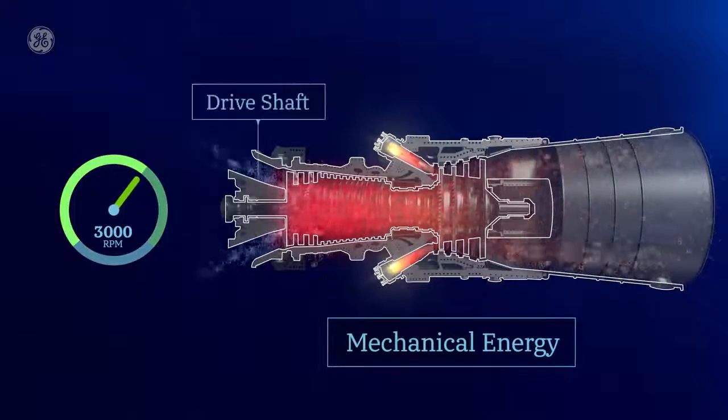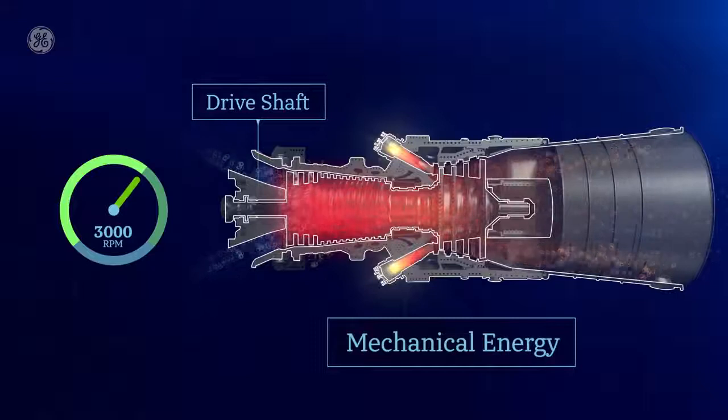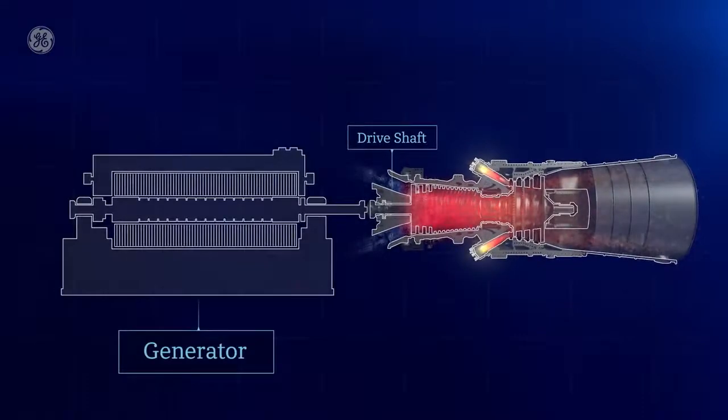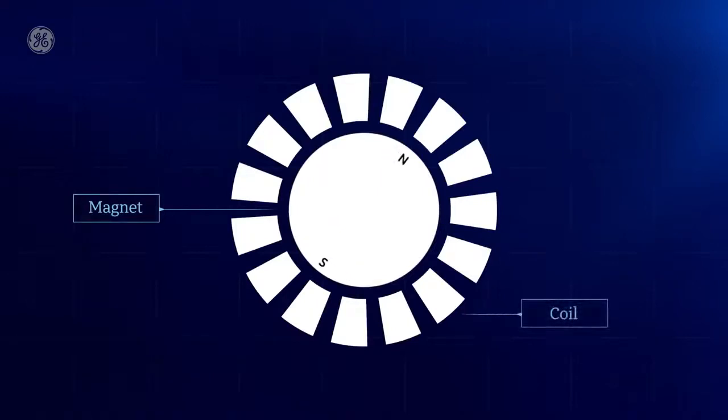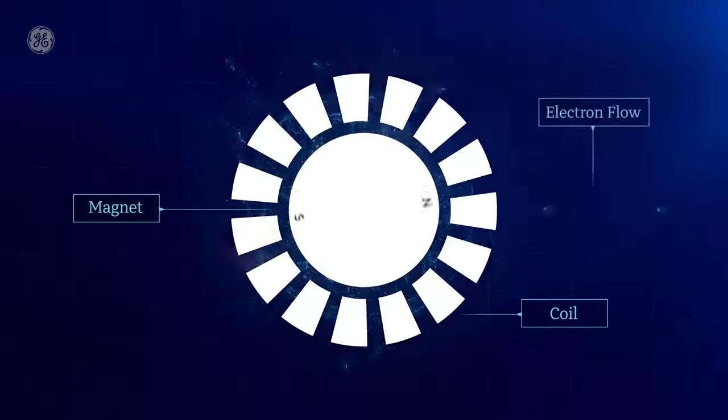The drive shaft is connected to the generator, which has a large magnet surrounded by coils of copper wire. When that magnet gets rotating fast, it creates a powerful magnetic field that lines up electrons around the coils and causes them to move.